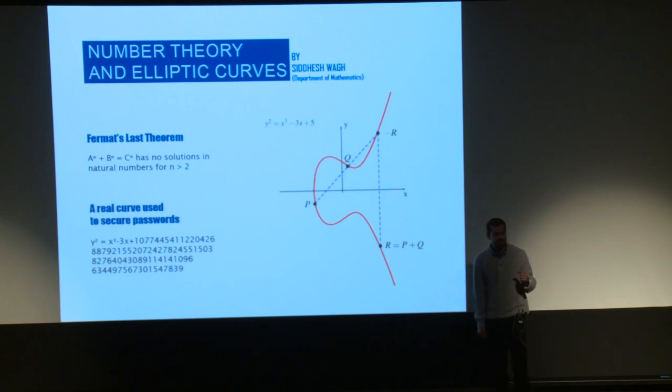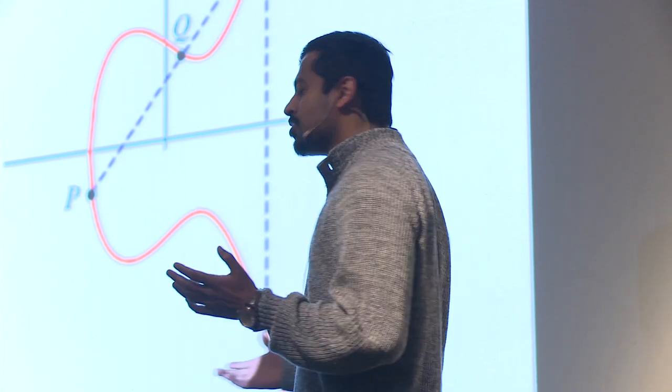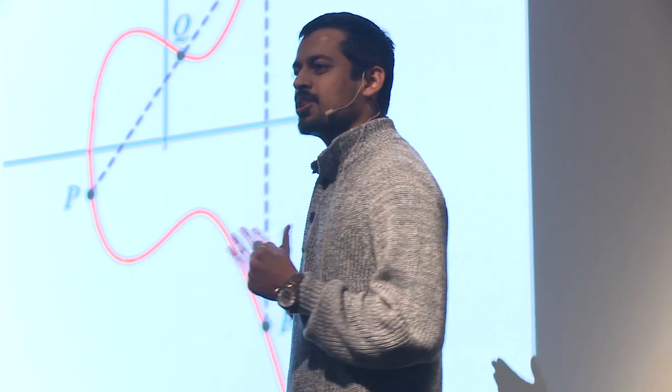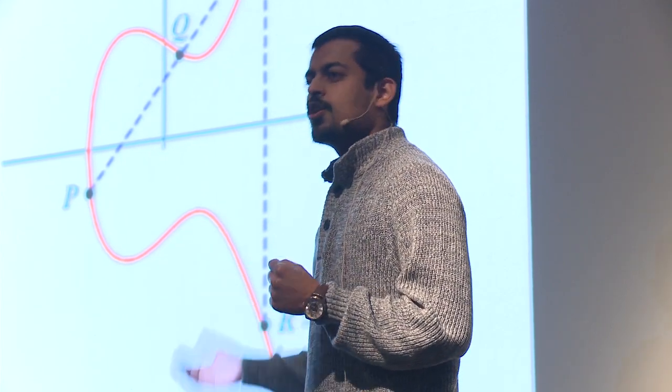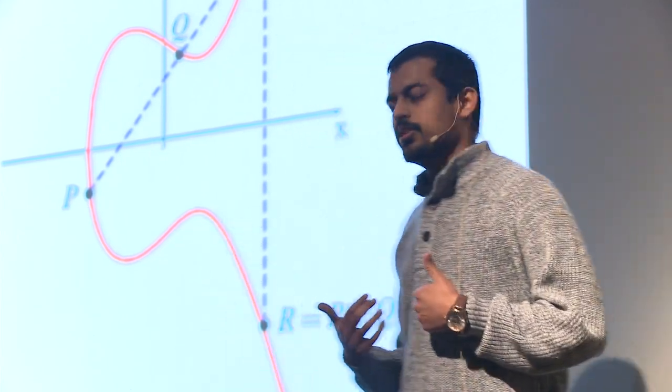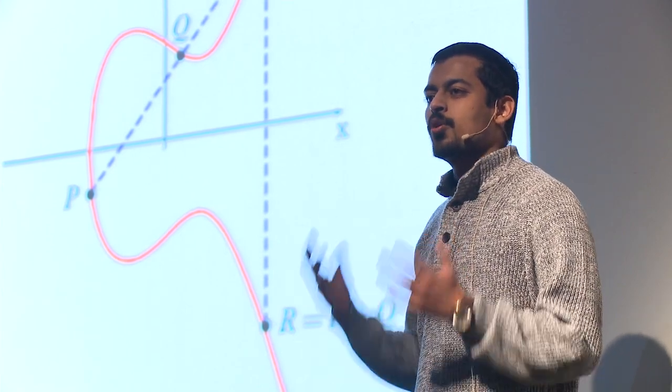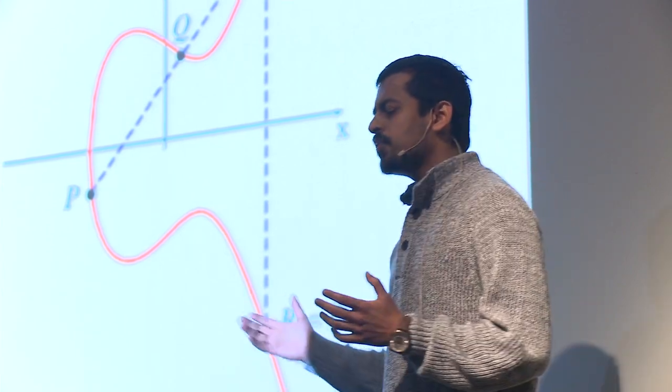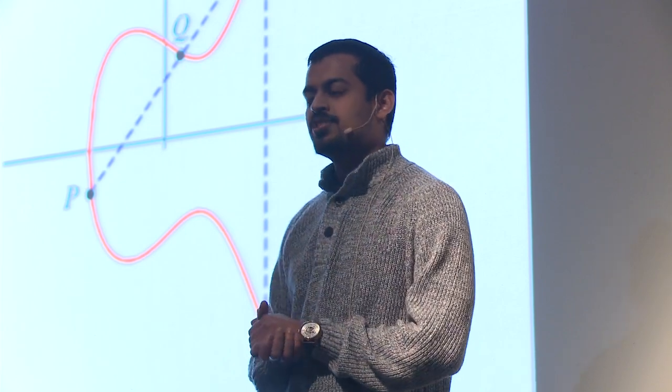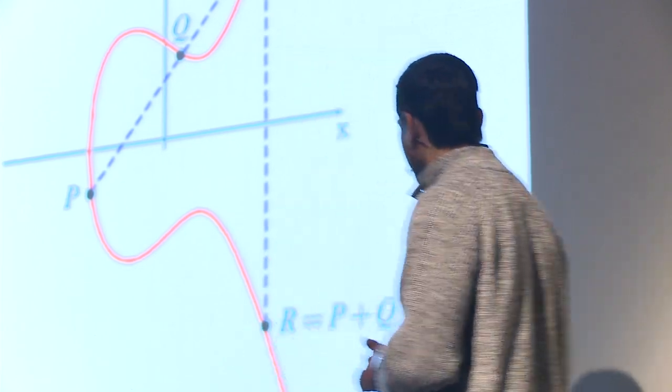That's where we number theorists come in. What we do is we try to study these elliptic curves and their properties. What I do, in particular, is I try to create new elliptic curves from old elliptic curves. Hopefully, this will increase our efficiency of algorithms by a lot.